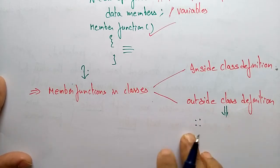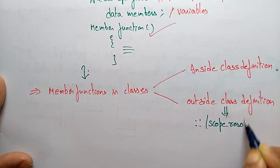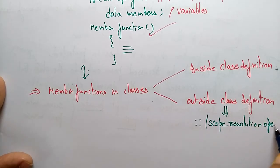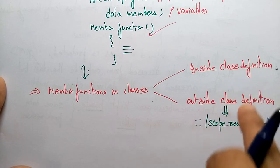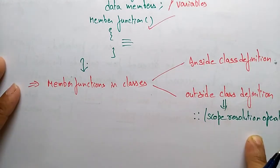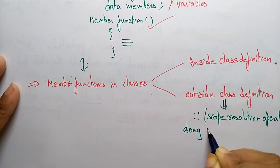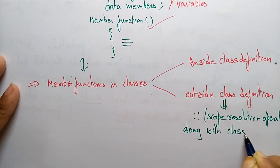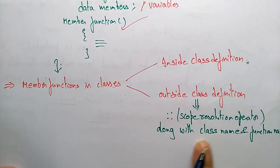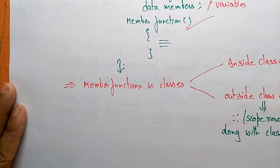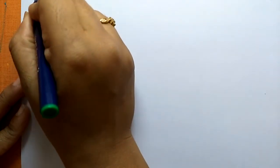You have to use the scope resolution operator. If you are defining a function outside the class definition, you have to use the scope resolution operator along with the class name and function name. Now let us see how these class member functions will be present inside the class definition and outside the class definition, with one example.